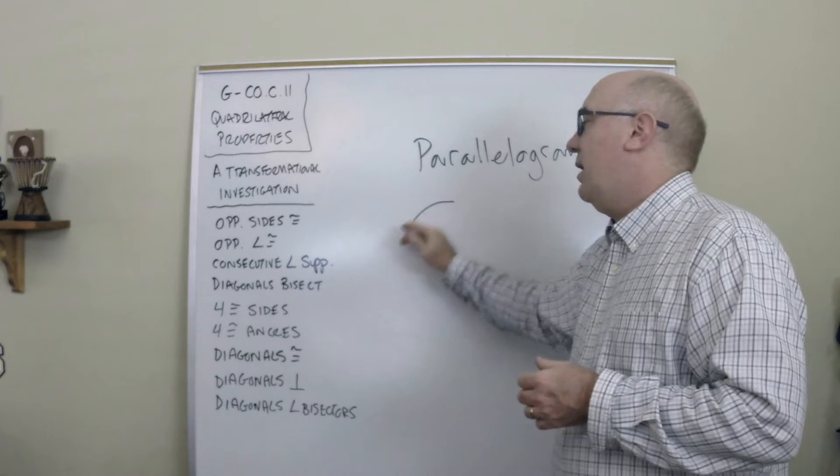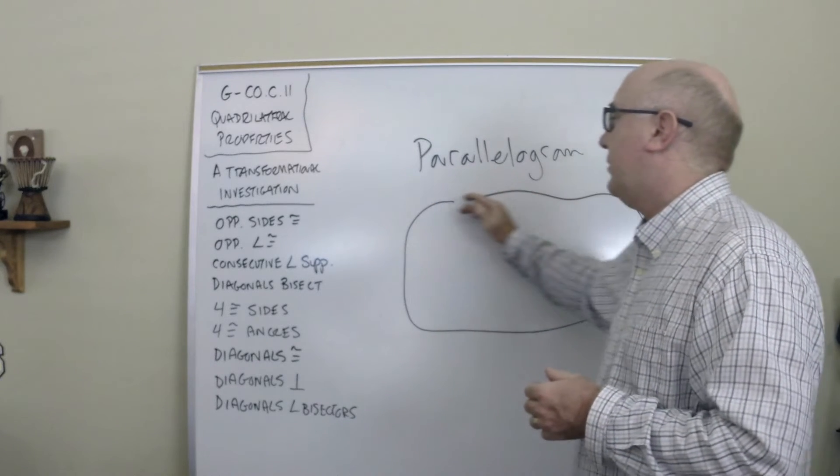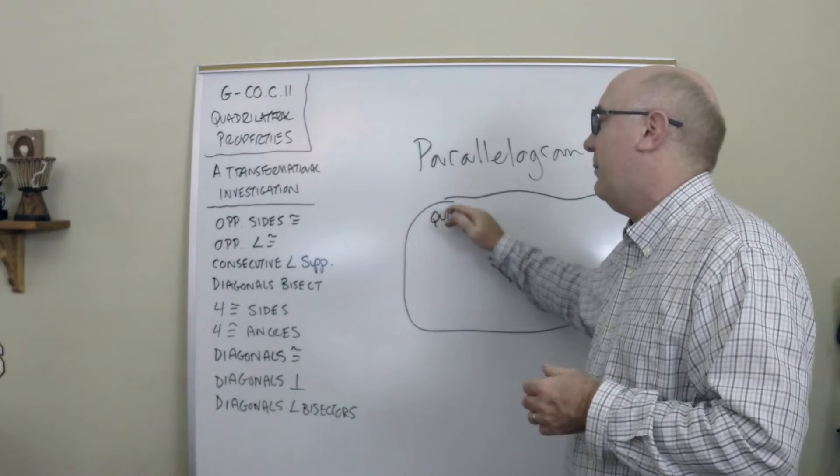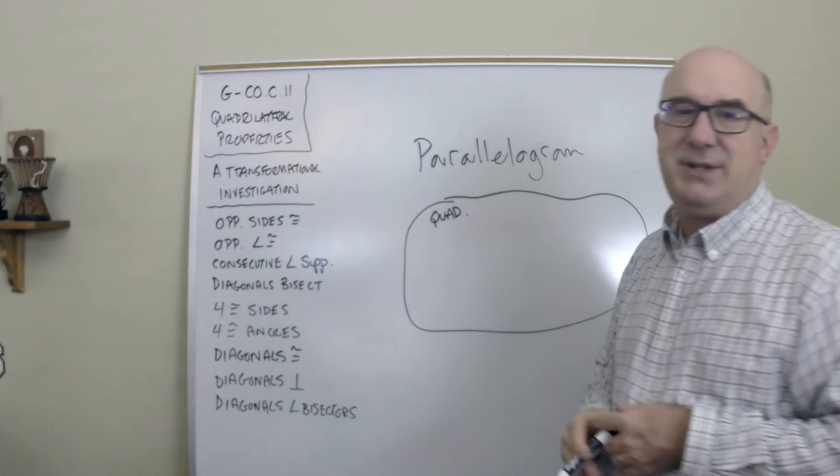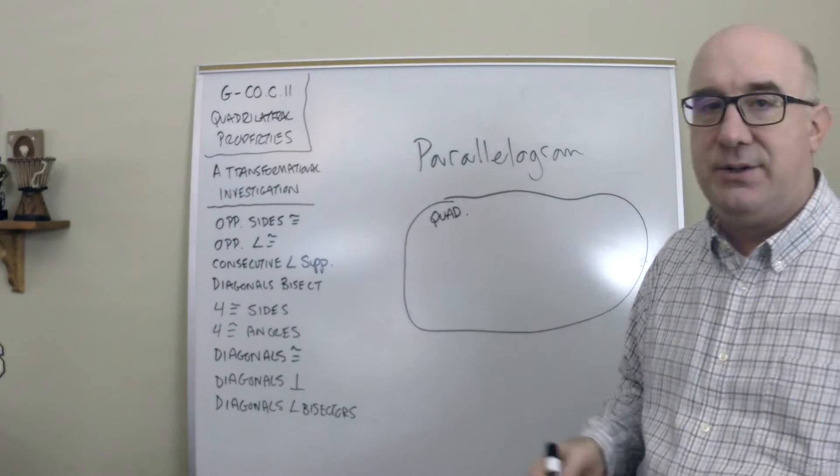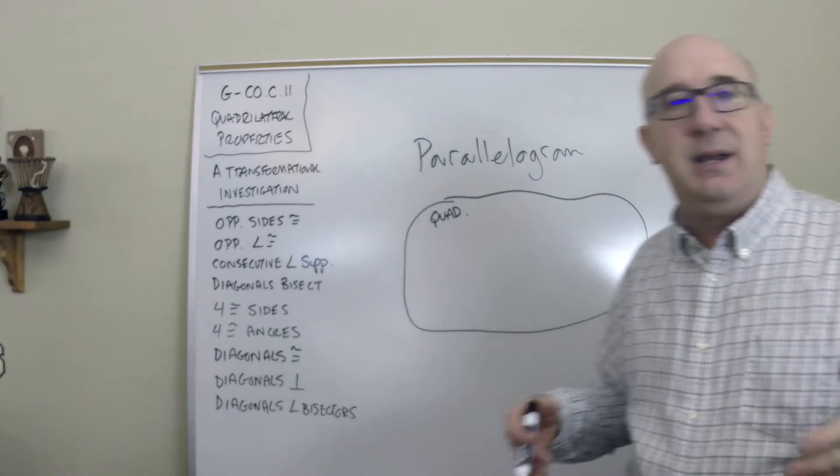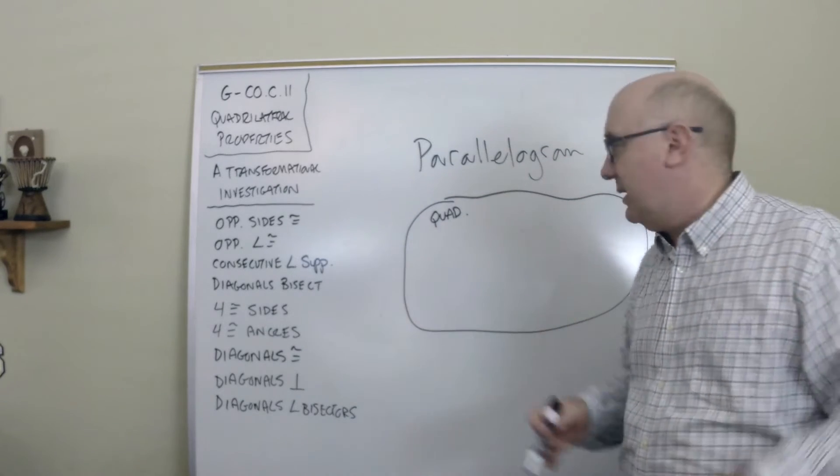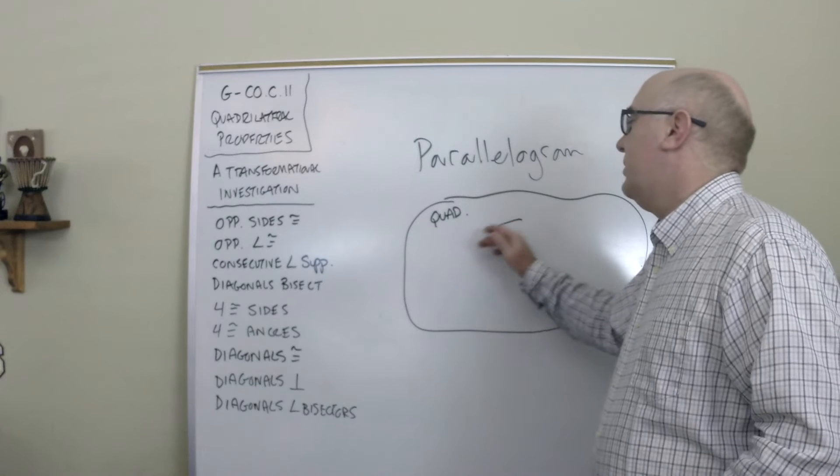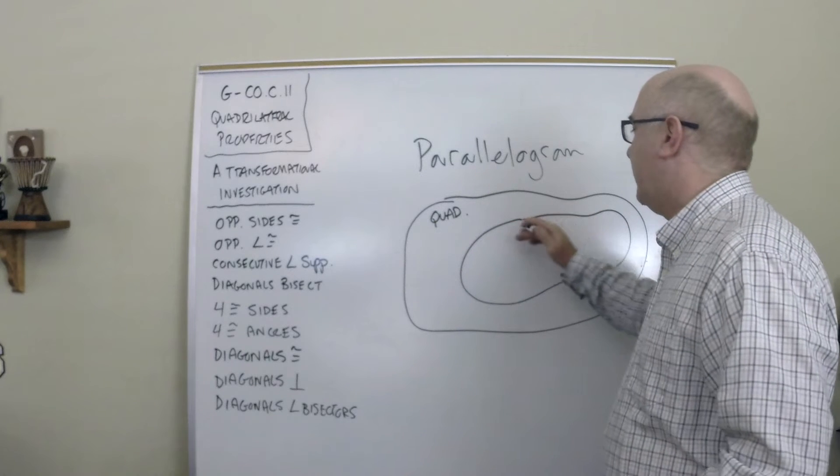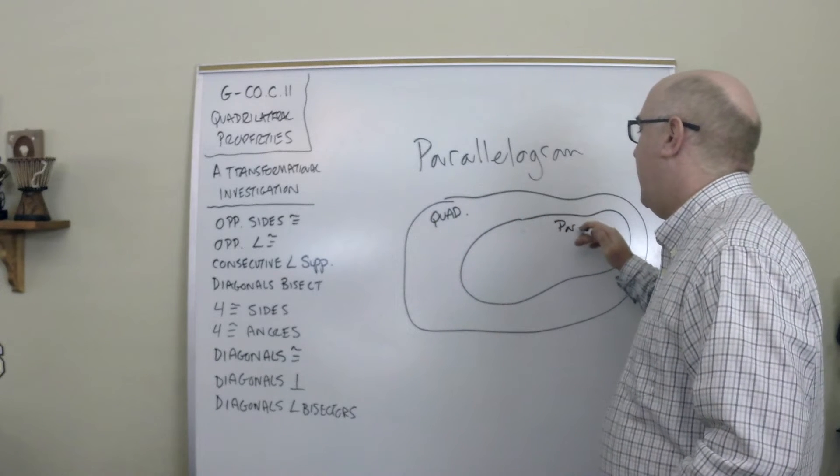Let's say this is a Venn diagram of all the quadrilaterals. Everybody—squares, rectangles, trapezoids, convex, concave—everybody's in here somewhere. In here there's a family called the parallelograms.